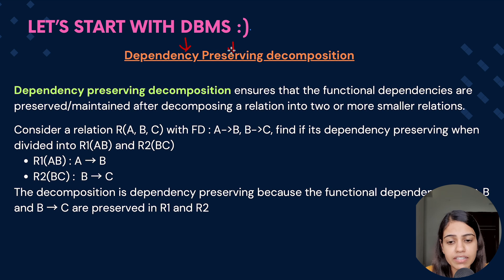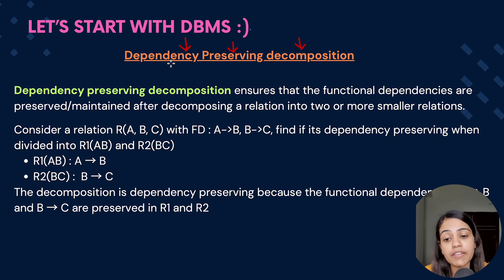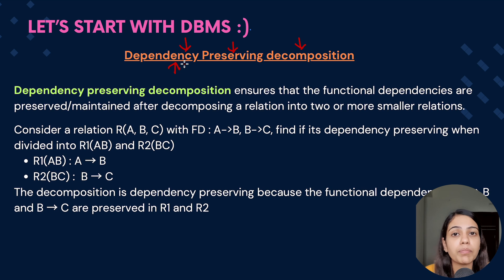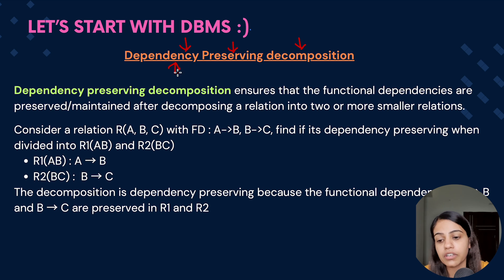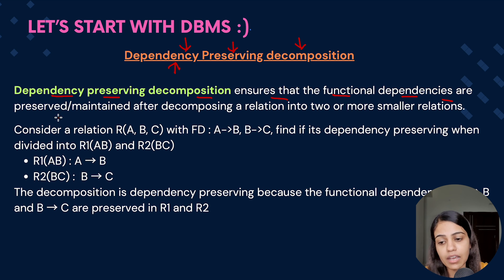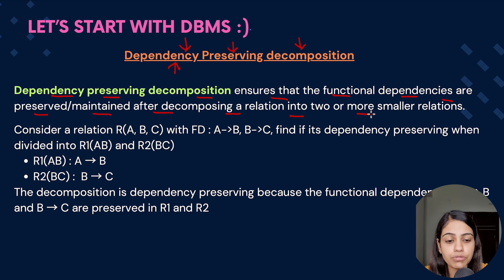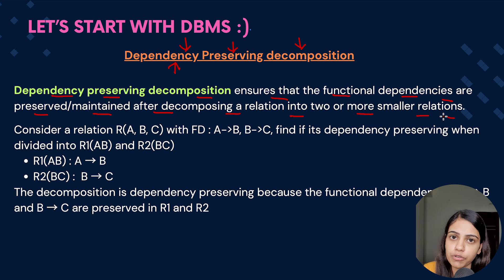As the word suggests, dependency preserving decomposition — whenever we are in a process of decomposition, if the functional dependencies before the decomposition and after the decomposition are preserved or maintained, we call it dependency preserving decomposition. It ensures that the functional dependencies are preserved or maintained after decomposing a relation into two or more smaller relations.